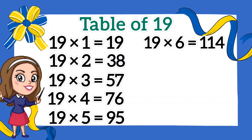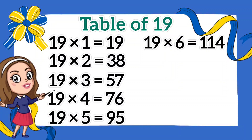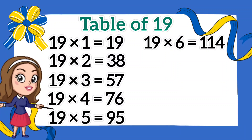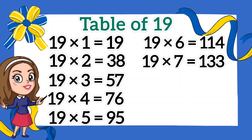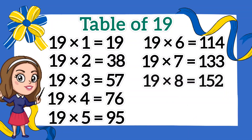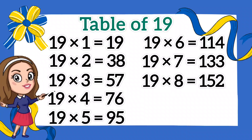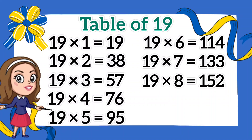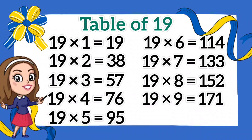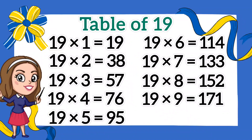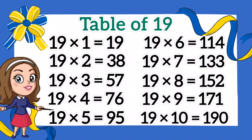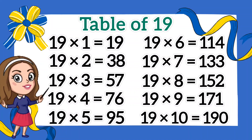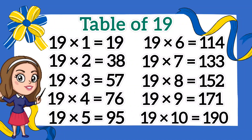Nineteen sixes are 114. Nineteen sevens are 133. Nineteen eights are 152. Nineteen nines are 171. Nineteen tens are 190.